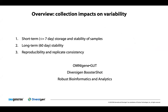For the rest of the talk, we're going to present a few key concepts and studies showing impact of variation, mostly in collection and storage. The first is a short-term stability — under seven days — storage evaluation of fecal microbiome samples. The second is a long-term 60-day hold stability, and then finally showing reproducibility and replicate consistency. I'm also going to describe a few key tools we're developing and using here at DNA Genotech and Diversagen to mitigate some of this bias and variability.